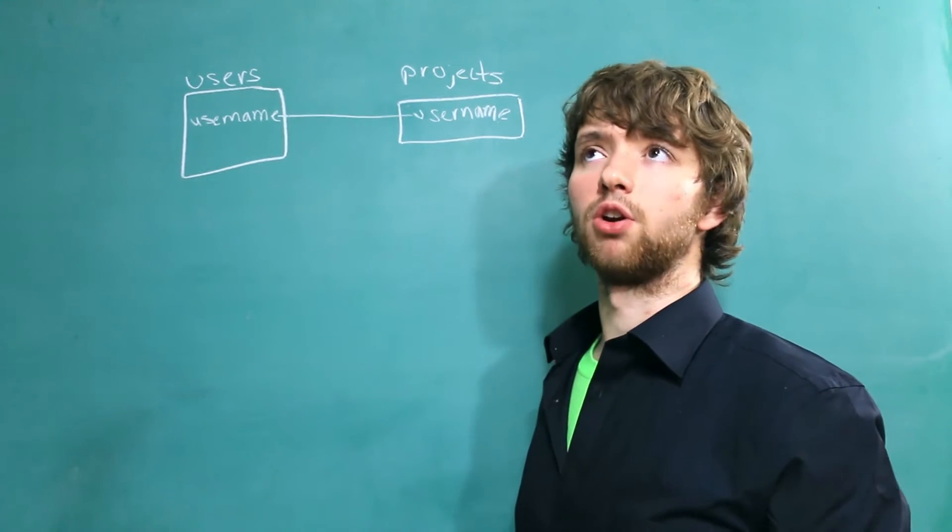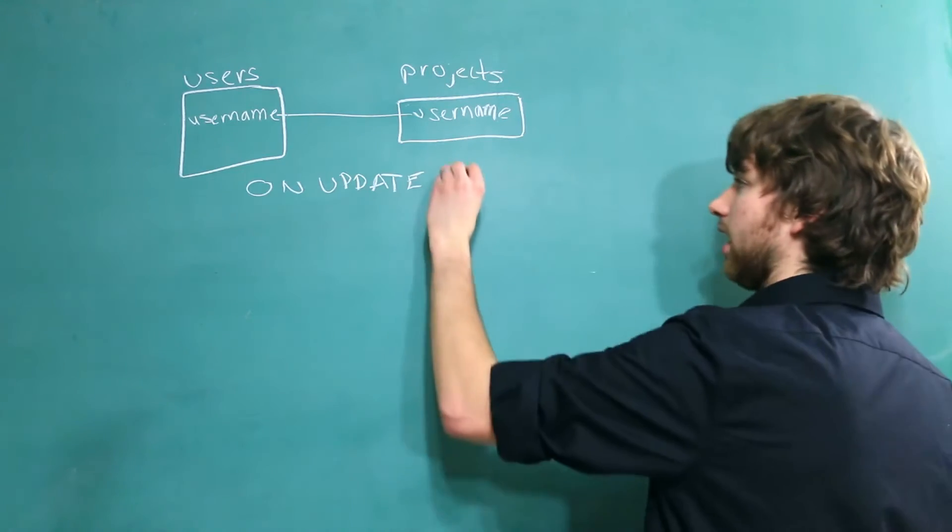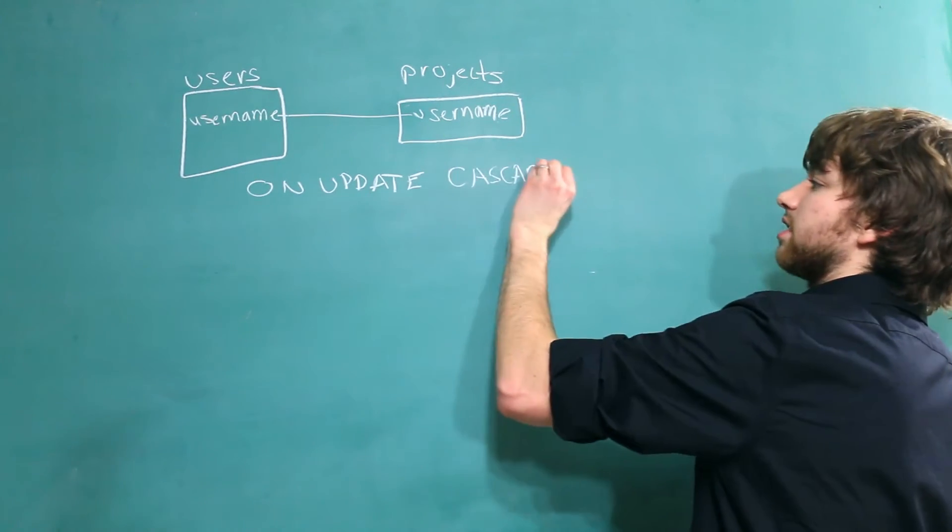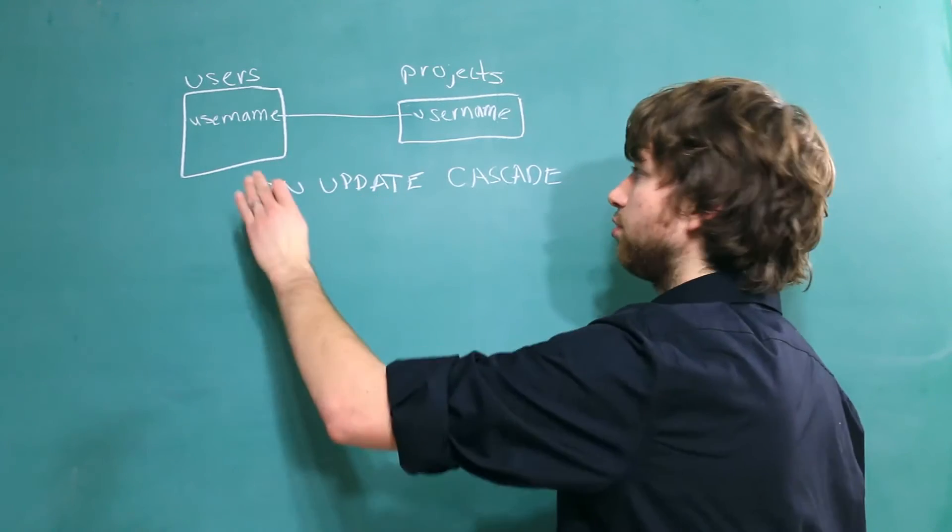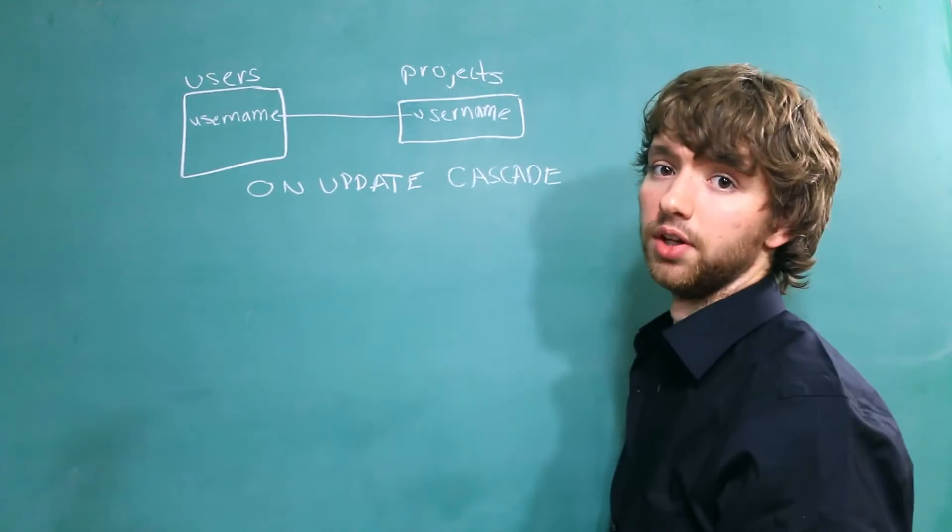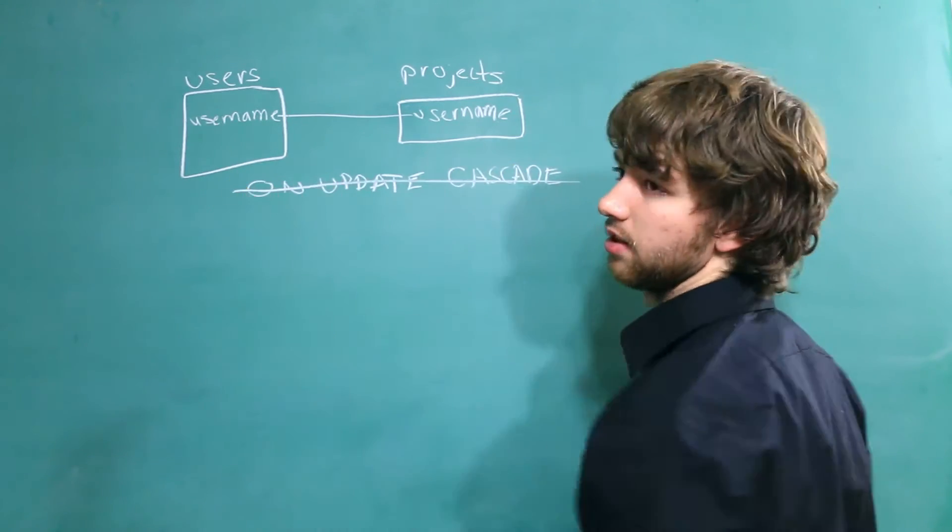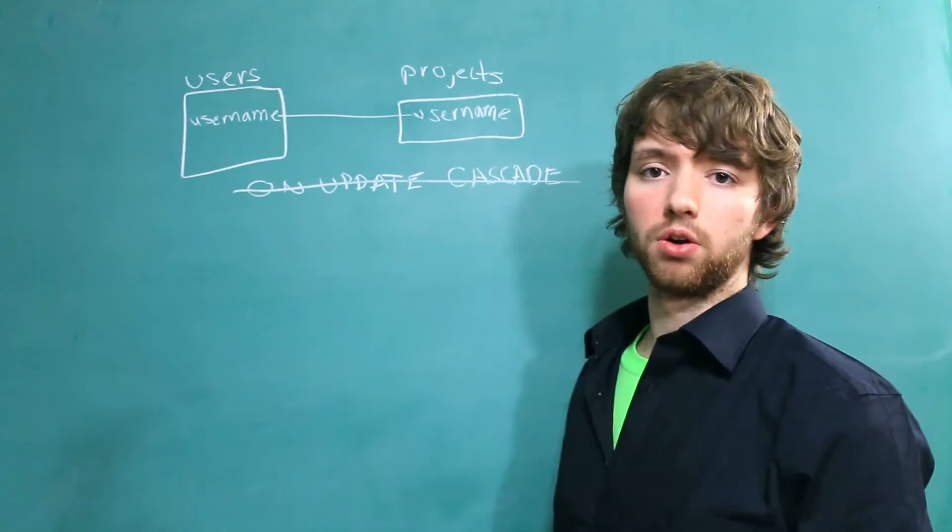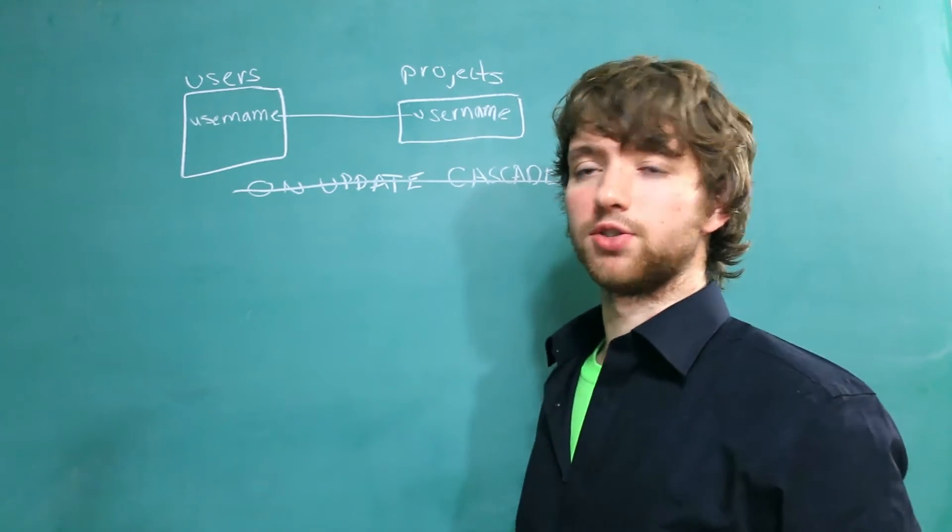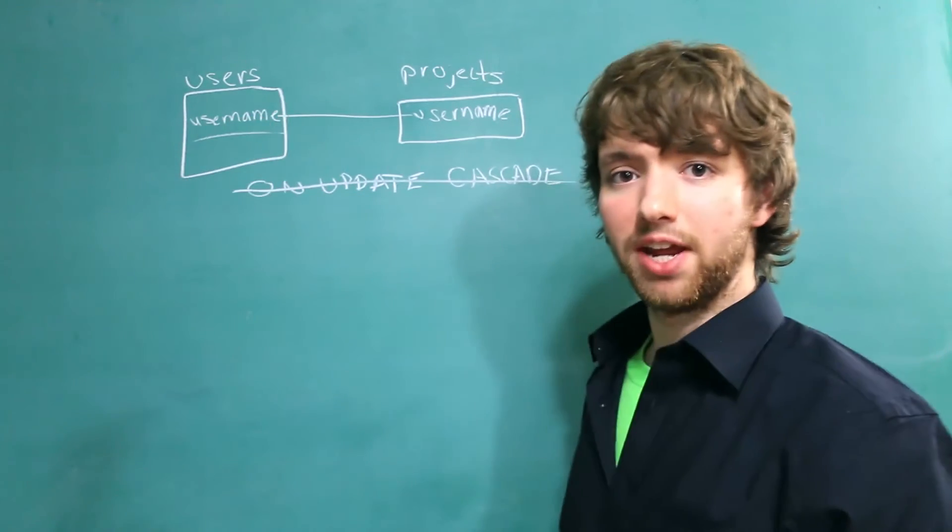Now, some database systems have something called on update, and then we could say cascade, and this works very similar to the on delete. Essentially, if the person updates their username, the username in this table is also going to update. Unfortunately, Oracle does not have this, so there's not a real super easy way to do something like this in Oracle. That's why I'm stressing it so much that if you do this, you need to make it to where the username does not change.